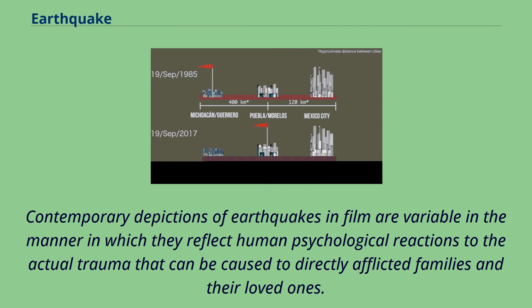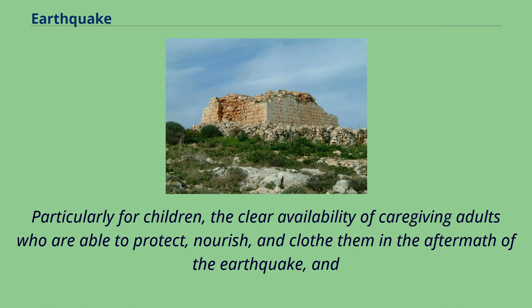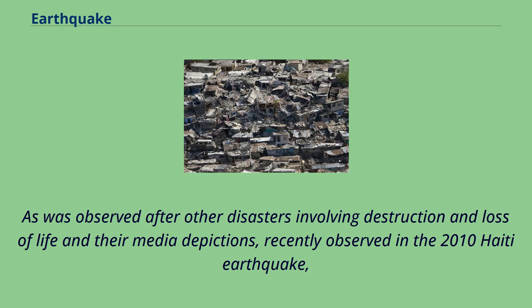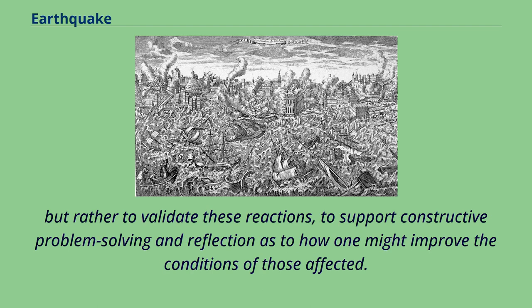Contemporary depictions of earthquakes in film are variable in the manner in which they reflect human psychological reactions to the actual trauma caused to directly afflicted families. Disaster mental health response research emphasizes the need to be aware of the different roles of loss of family and key community members, loss of home and familiar surroundings, and loss of essential supplies and services. Particularly for children, the clear availability of caregiving adults who are able to protect, nourish, and clothe them in the aftermath of the earthquake has been shown to be even more important to their emotional and physical health than the simple giving of provisions. It is also important not to pathologize the reactions to loss and displacement, but rather to validate these reactions and support constructive problem solving.